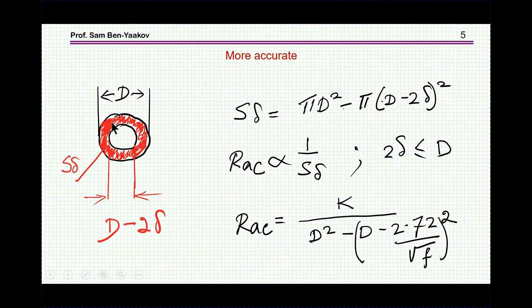So therefore, this area here is pi D square, and this is the new, or the smaller diameter, and since RAC is proportional to 1 over this area, we find this expression. This K is sort of the conductivity or resistivity of the copper or the conductor, and here we have the approximate expression for the skin depth.